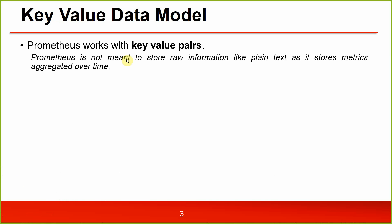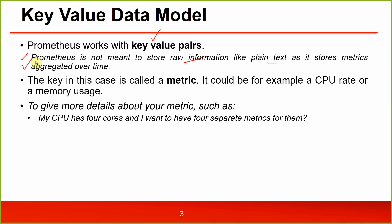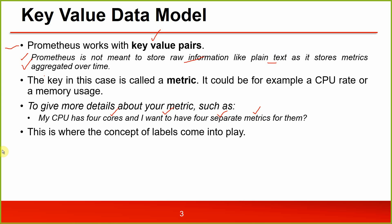Prometheus works on key-value pairs. Prometheus is not meant to store raw information like plain text — it stores a matrix aggregated over time. It is not for text information. The key in this case is called a metric; it could be, for example, a CPU rate or memory usage.